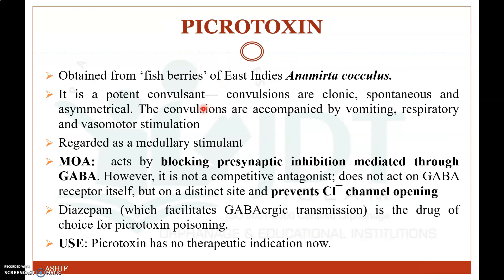The next drug is picrotoxin. It is obtained from the fish berries of East India, Anamirta cocculus, and it is a potent convulsant. Convulsions may be clonic, spontaneous, and asymmetrical, usually accompanied by vomiting and respiratory and vascular stimulation. It is also known as a medullary stimulant. Its mechanism of action is blocking post-synaptic inhibition mediated through GABA, an inhibitory neurotransmitter.